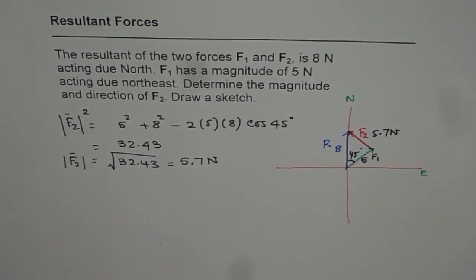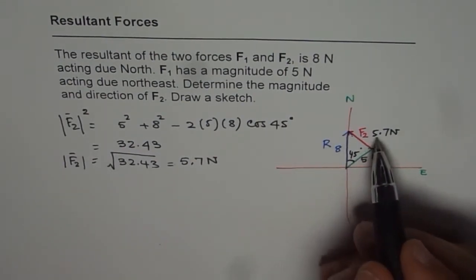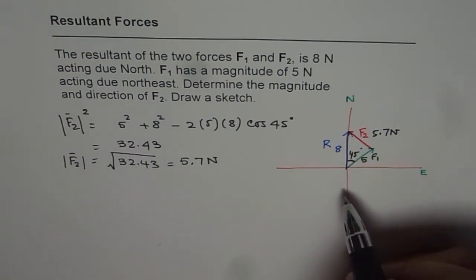Now we need to find the direction. Vector means we need to find both magnitude and direction as specified in the question. Now since we know one set which is side and opposite angle, we can use sine law and find one of these angles.